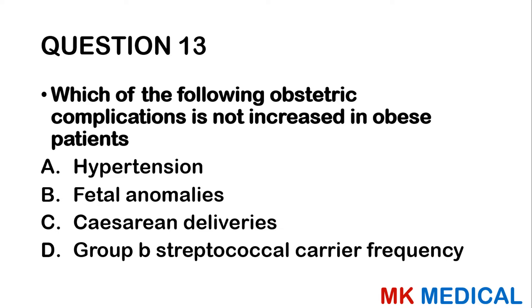Question 42: Most common cause of vesicovaginal fistula in Zambia is: A — poorly performed gynecological surgery. B — irradiation. C — obstructed labor. D — trauma. E — forceps delivery. A vesicovaginal fistula is an abnormal connection between the vagina and the bladder. It is very common with obstructed labor. The answer is C.